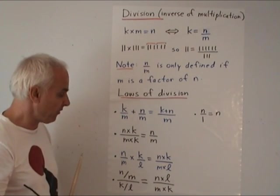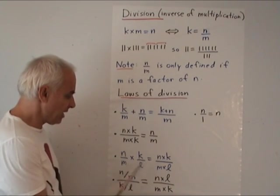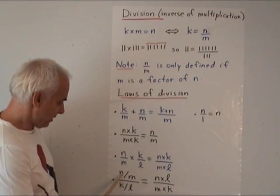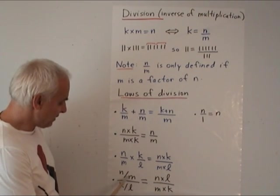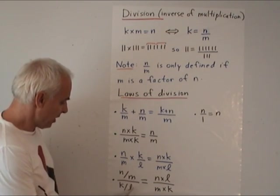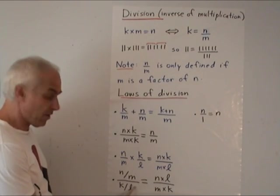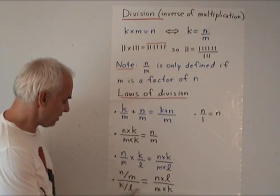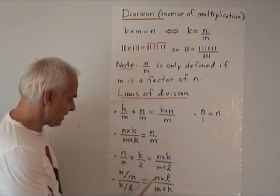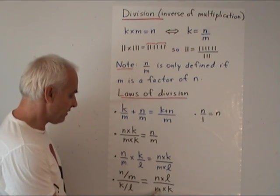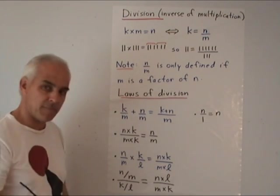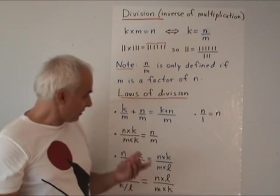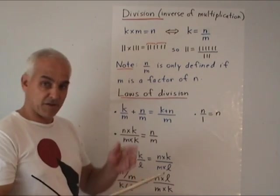If we have N divided by M and we multiply by K divided by L — thinking of each as an entity and multiplying these two — then that's the same as (N times K) divided by (M times L). Perhaps the most complicated one: N divided by M, that's a natural number; if we divide that by another division K divided by L, that equals (N times L) divided by (M times K).